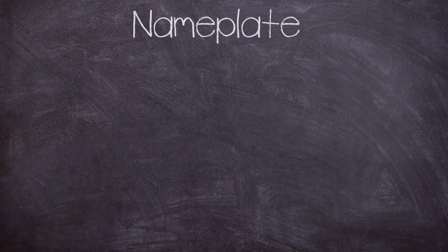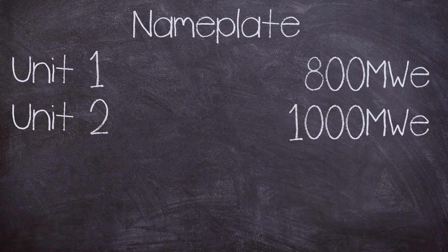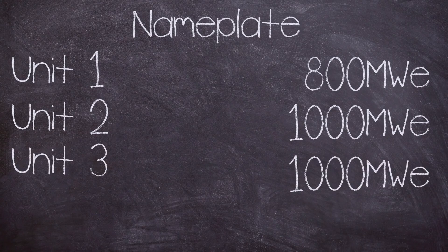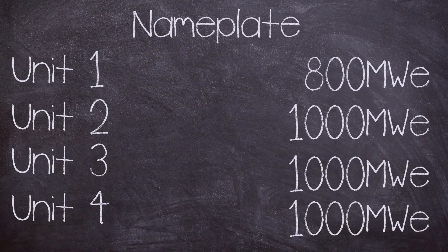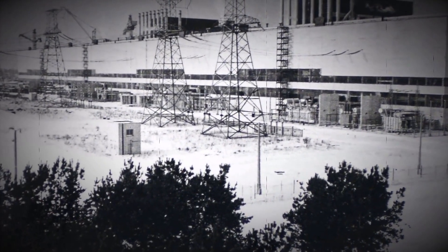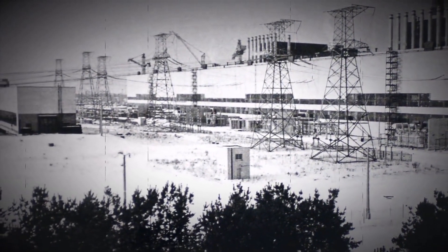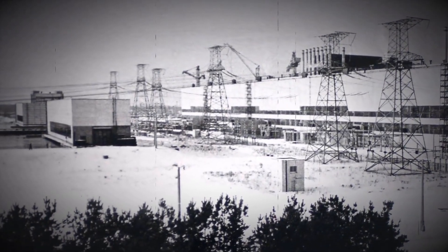The nameplate capacity of Chernobyl nuclear power plant was: unit one at 800 megawatts of electricity, unit two at 1000 megawatts, unit three also at 1000 megawatts, and the same with unit four. In this video I'll be focusing on the second generation RBMK, its design, and more specifically unit four.